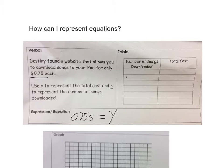The second way you could do is using a table. So this is the verbal where you have your written, this is the expression or equation, 0.75S or 75 hundredths S. You could also write this as 3 fourths S equals Y, because 0.75 and 3 fourths the same. Let's come over here to the table.